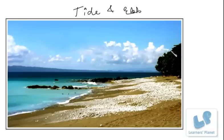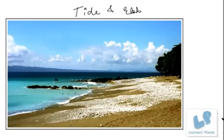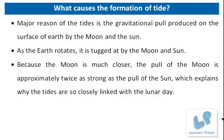Tides are caused by the gravitational pull of the Sun and the Moon on the Earth's surface. The major reason for tides is the gravitational pull produced on the surface of Earth by the Moon and the Sun. As the Earth rotates, it is tugged at by the Moon and the Sun.